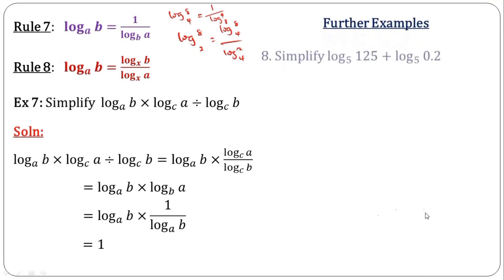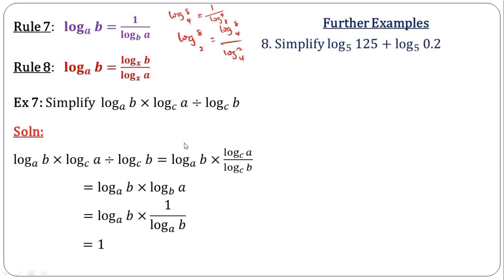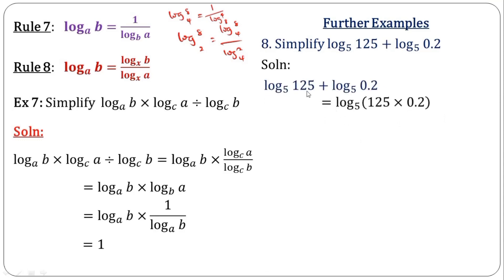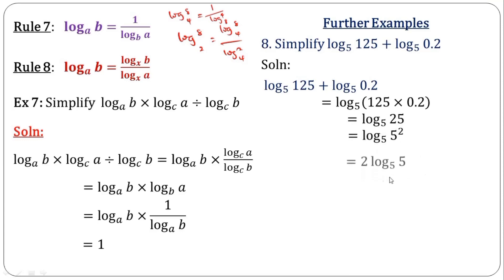Let's look at some further examples to reinforce the rules. We should simplify log 5 plus log 5, all to base 5. Addition changes to multiplication, so these two multiply in base 5 to give log 25. We change 25 to base 5 — that is 5 squared — and bring the 2 to the back. Log 5 base 5 equals 1, so 2 times 1 gives us 2.